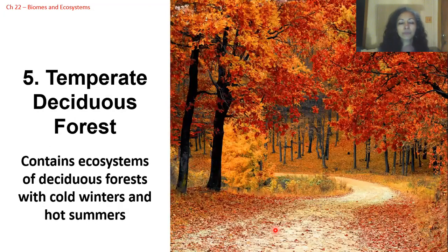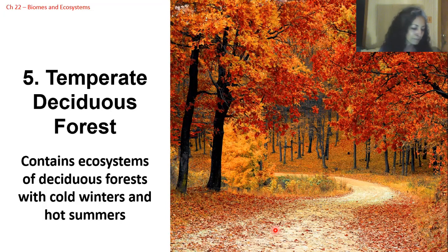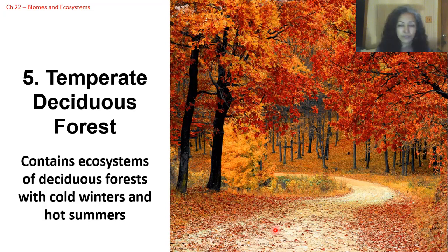The temperate deciduous forest biome features broadleaved trees that drop their leaves in winter and enter a dormant stage. This biome contains ecosystems with cold winters and hot summers. It supports a diverse variety of plants and trees — maples, oaks, birch — trees that gain beautiful fall colors through full seasons. Animals here include chipmunks, raccoons, opossums, and foxes. This type of forest is actually the most common in the U.S.